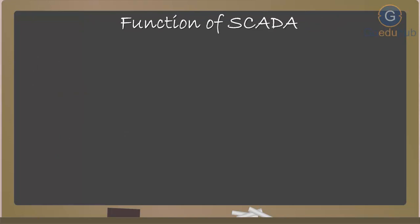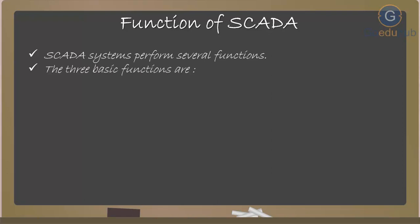SCADA systems perform several functions. The three basic functions are: first, monitoring — which collects data and sends it back to the central computer; second, control — which gathers data from monitoring sensors, processes it, and sends control signals back to equipment according to a prescribed software program; and third, user interface — which is often a large control room where individuals can monitor SCADA input and output responses in real-time.